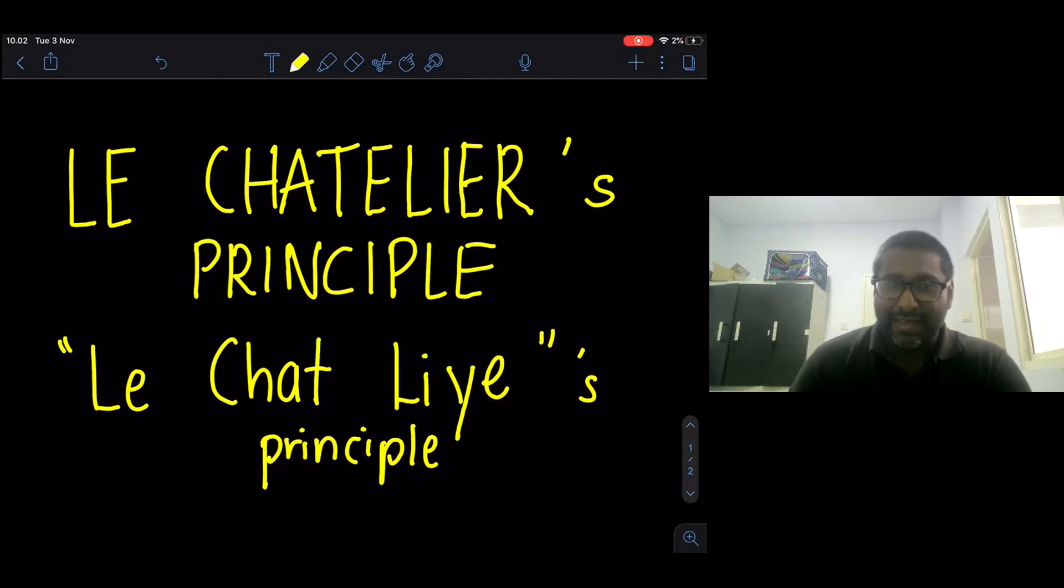You can see here, the way we pronounce, this is L. If you add another E, then it's going to be Lee. So this is L, chat, and then followed by Leah. And then, L, chat, Leah's principle. So, L, chat, Leah's principle.